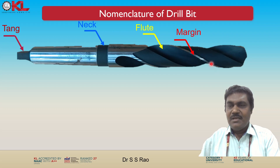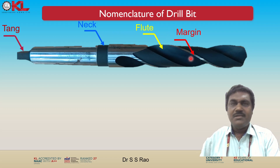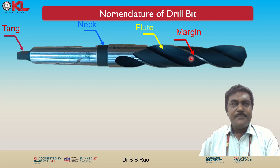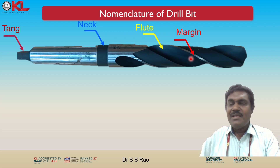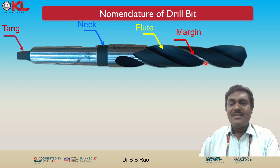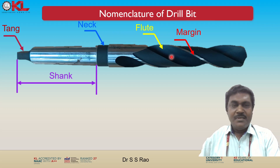Next is the margin. There is a rectangular ribbon-type feature on the helical surface called the margin. The margin is the smooth uncut surface along the circumference of the drill bit body. It helps to maintain the stability of the drill bit during drilling and prevents it from wandering. So the margin is mainly provided to maintain stability during the drilling operation.